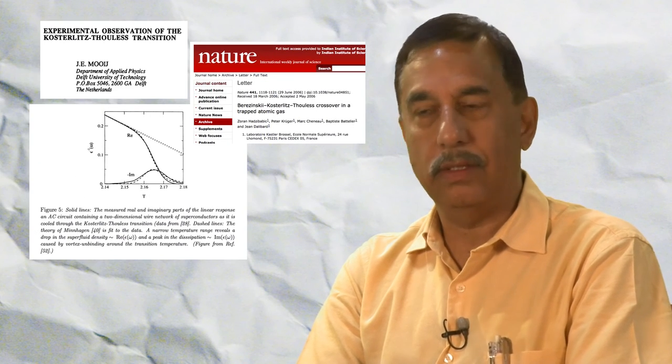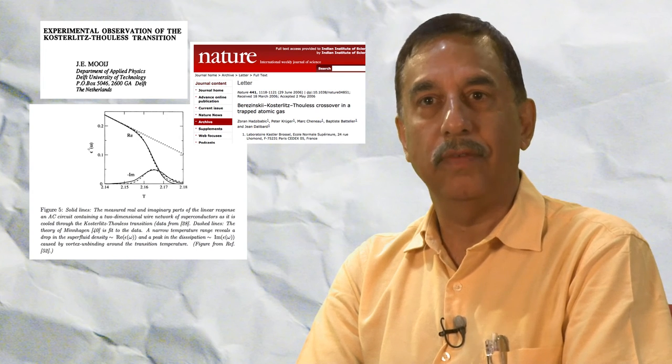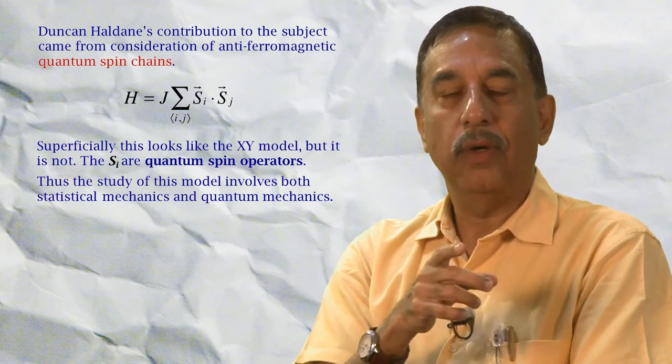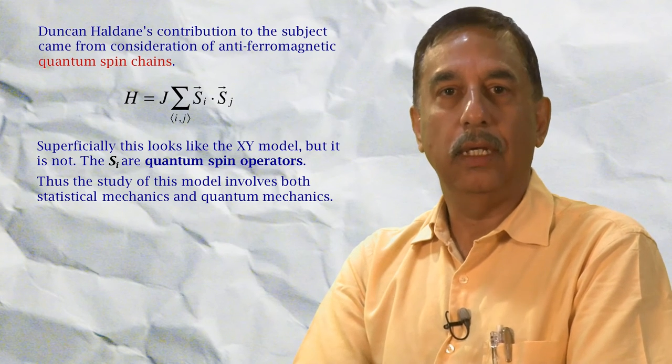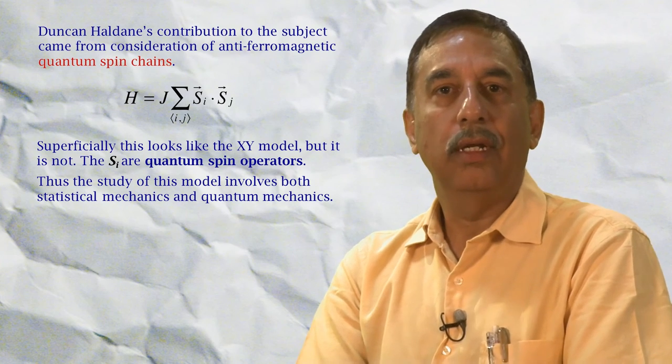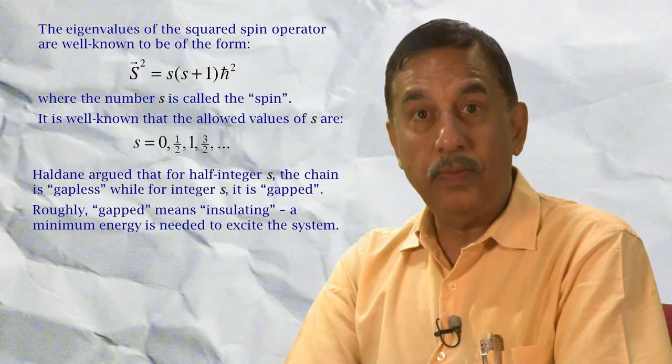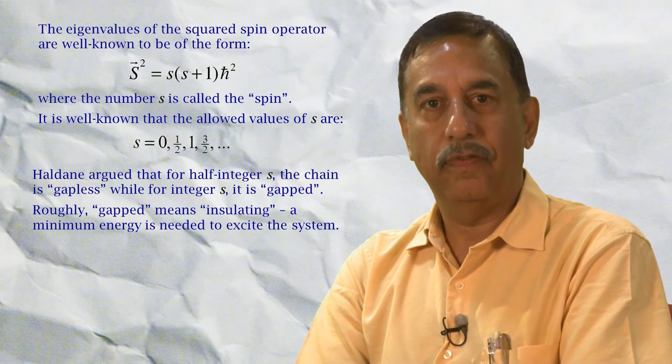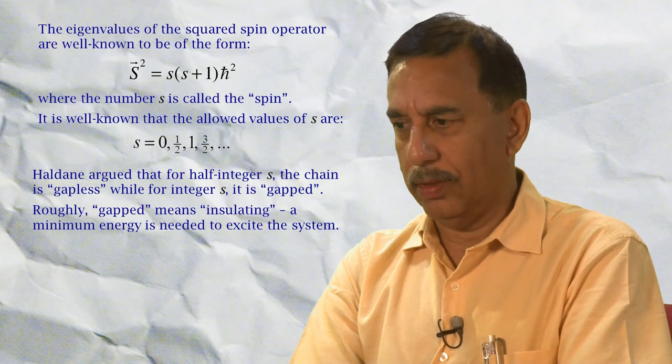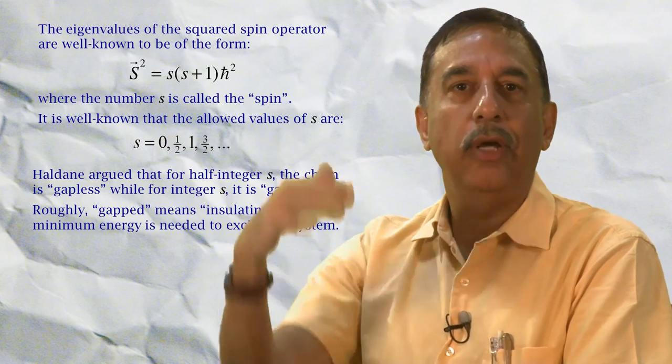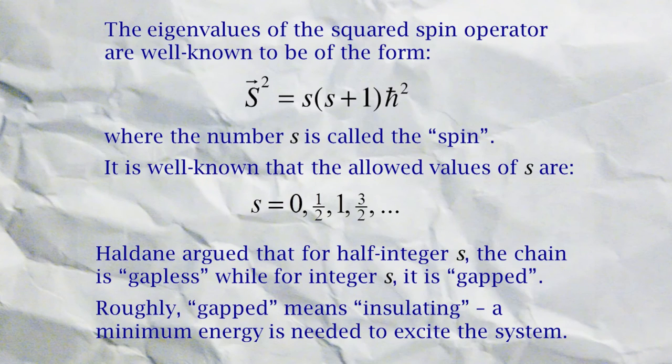Now I will briefly talk about Haldane's contribution. Nominally it was the same kind of system, except that for Haldane he was considering a quantum spin chain. So at each site of a 1D lattice you have a spin which is a quantum spin. It obeys the quantum rules and is represented by Pauli matrices, and he considered the antiferromagnetic system, so the Hamiltonian likes for these spins to be anti-aligned. Now these spins, as is well known, are quantized in units of h-bar, and the units are 0, 1/2, 1, 3/2, etc.—half-integer or integer—these are the rules of quantum mechanics. Haldane argued that for half-integer spins the chain is gapless, which means there is no gap to excite the degrees of freedom, while for integer spins it is gapped. Gapped roughly means insulating; gapless roughly means conducting.